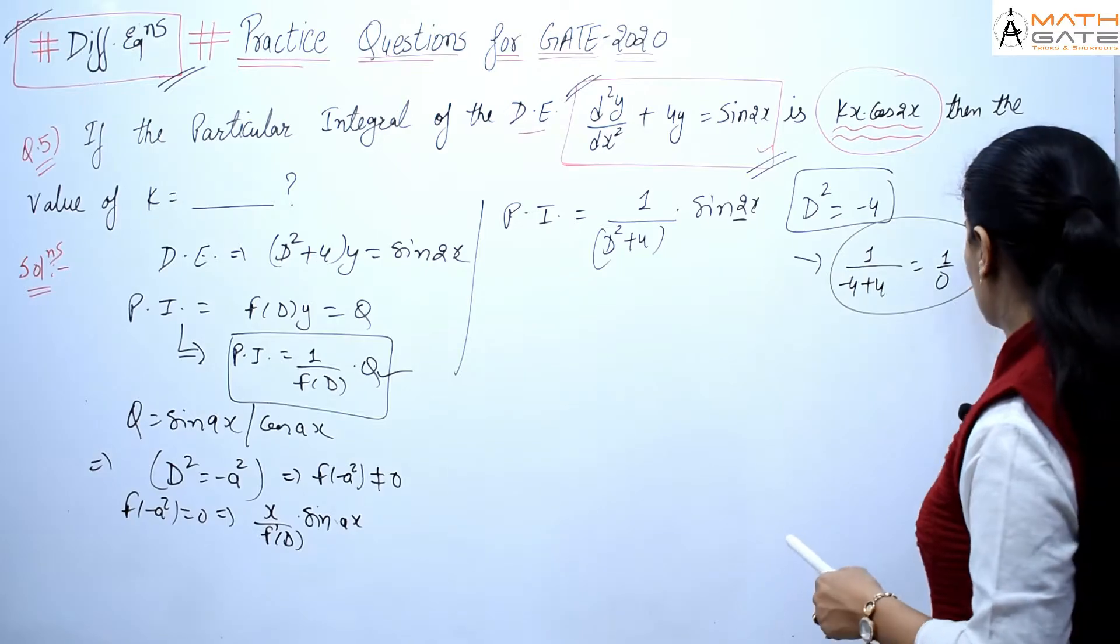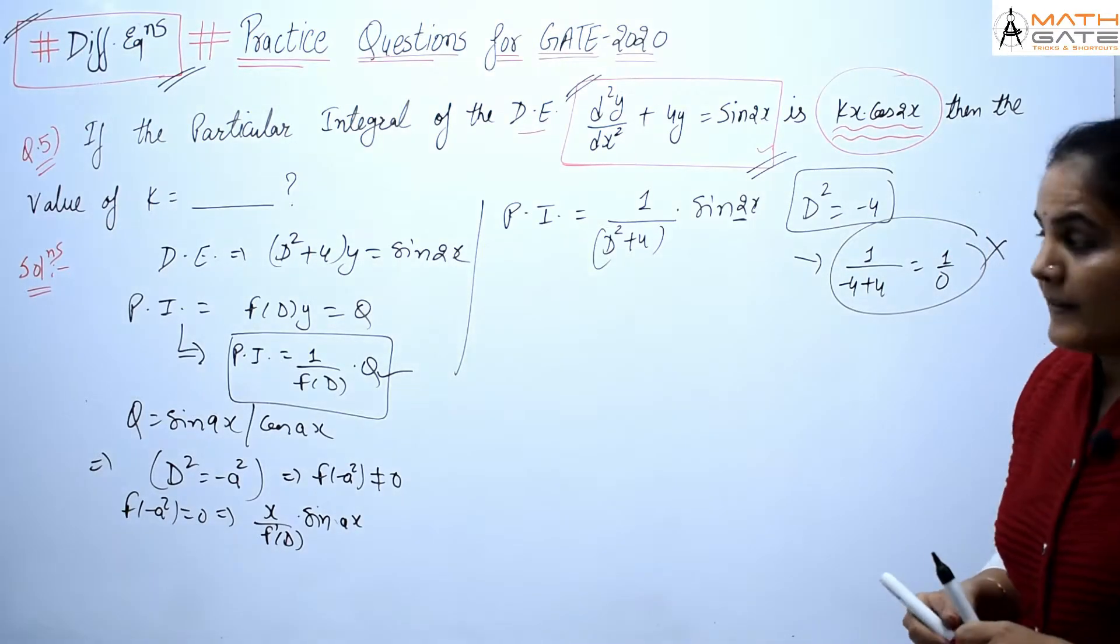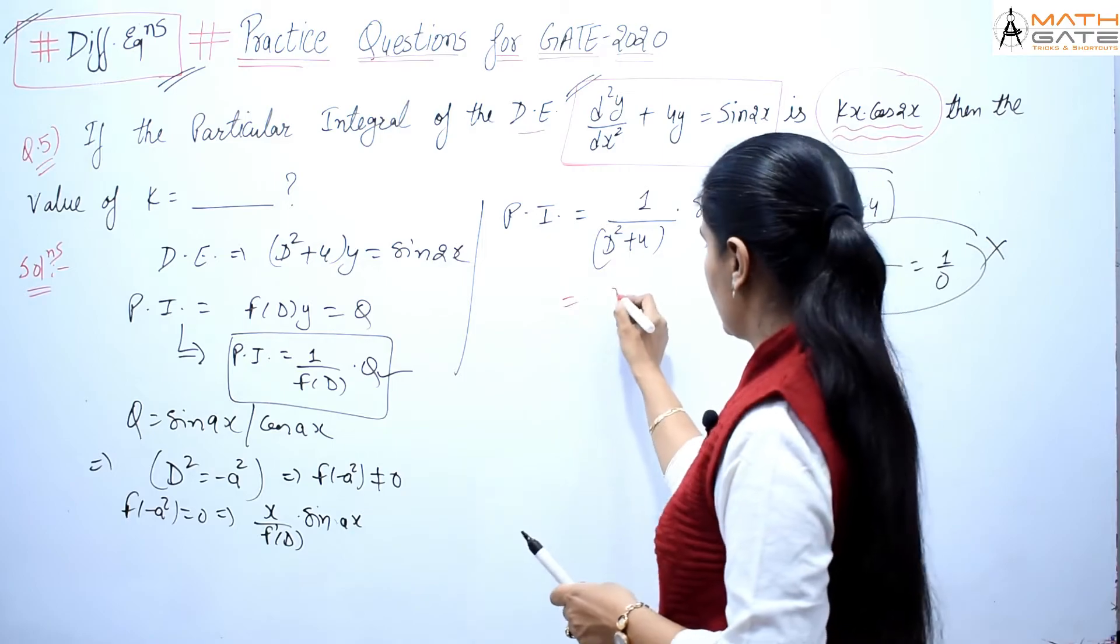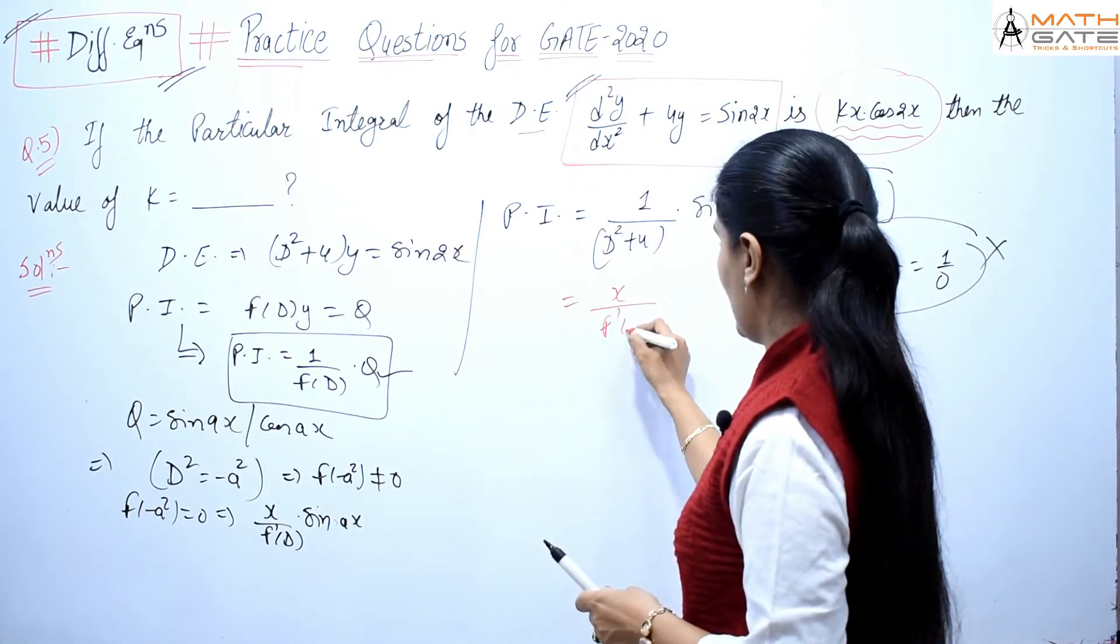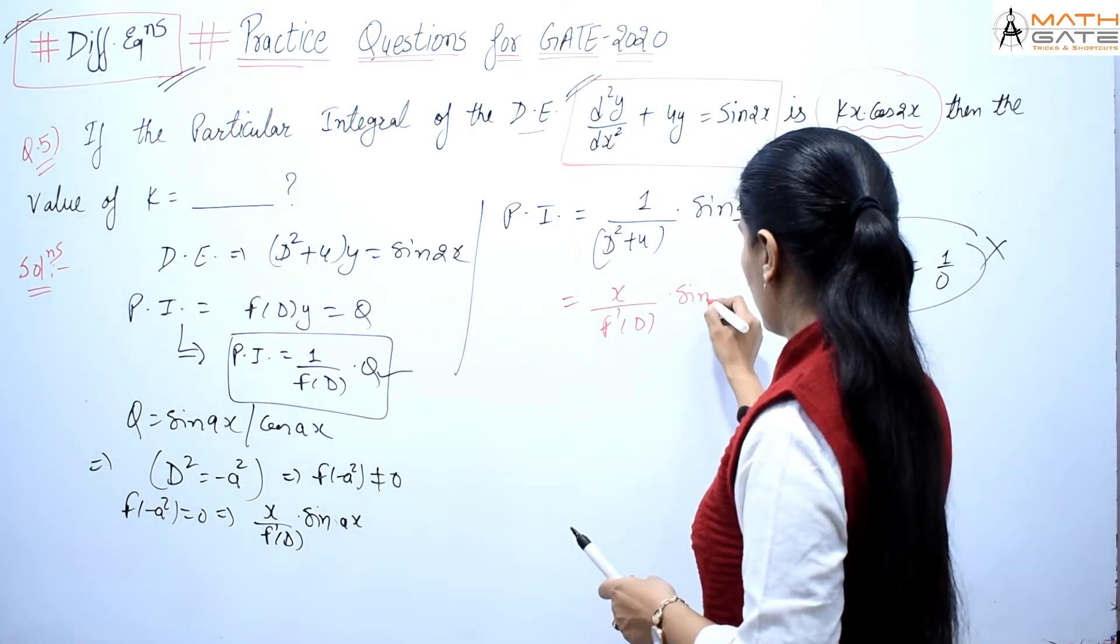And we can say that now we cannot apply this form. We cannot do this. If we cannot do this, then what will happen? We can write it as x/(f(D)) times sin(2x).